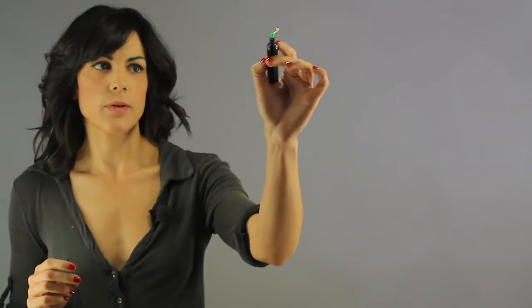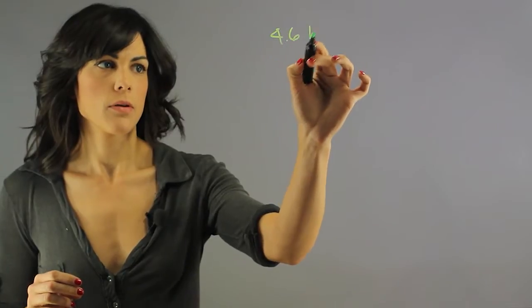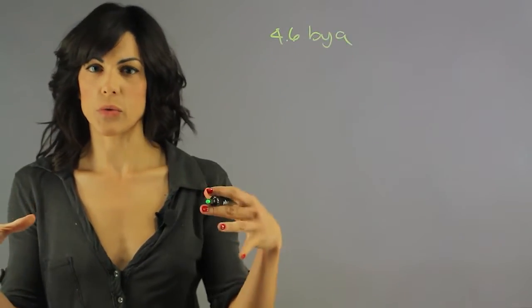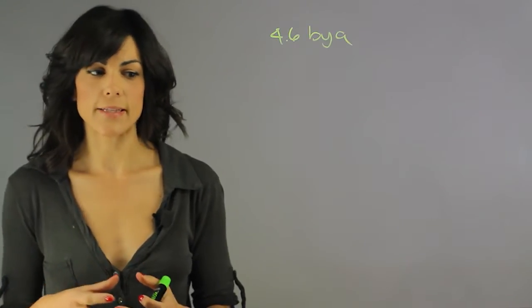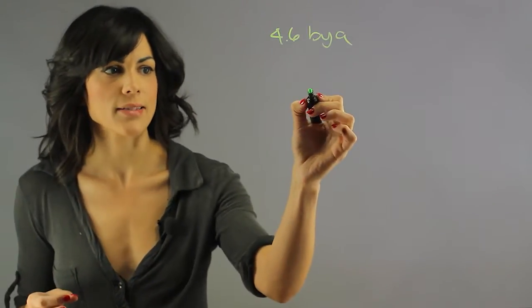We believe that the answer is yes. 4.6 billion years ago we had the formation of the solar system, and the way that these planets get to the size that they are is that they form a planetesimal, and then in their orbits around the Sun there's a lot of gas and dust.